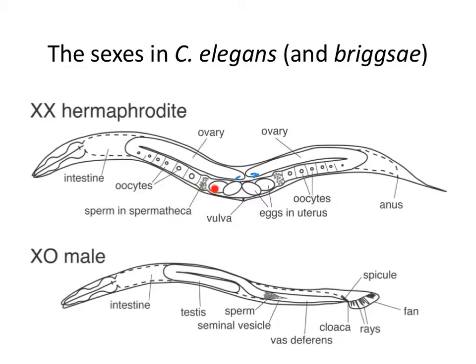Then, at some point during the late larval stage — right before worms become reproductive adults — something switches in that stem cell and the very next daughter cell it produces becomes an oocyte. It's sperm, sperm, sperm... then oocyte, oocyte, oocyte. There are never any confused gametes at the interface. At some point in development: sperm production stops and oocyte production begins.